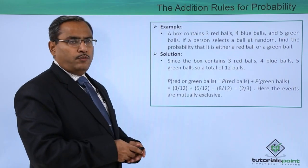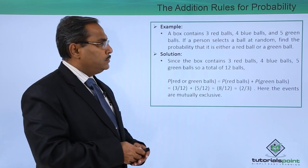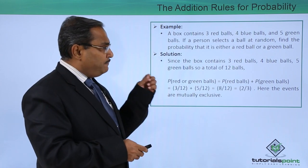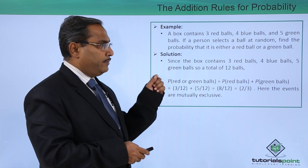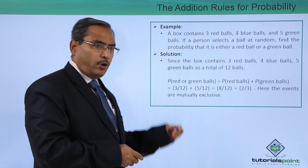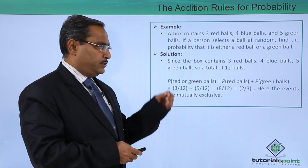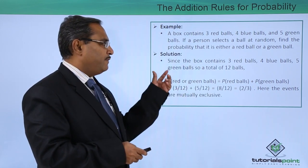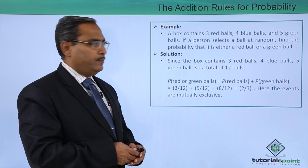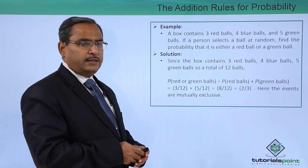Let us go for one example. A box contains three red balls, four blue balls, and five green balls. If a person selects a ball at random, find the probability that it is either a red ball or a green ball. Since the box contains three red balls, four blue balls, and five green balls, that is a total of twelve balls — three plus four is seven, plus five is twelve.